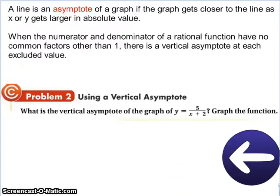Now, what that's going to help us with is something called an asymptote. If you notice on these graphs, they're going to keep getting closer and closer to a line, but they're never going to cross it. Well, that line, what they're getting closer and closer to, is called an asymptote. A line is an asymptote of a graph if the graph gets closer to the line as x or y gets larger in absolute value.